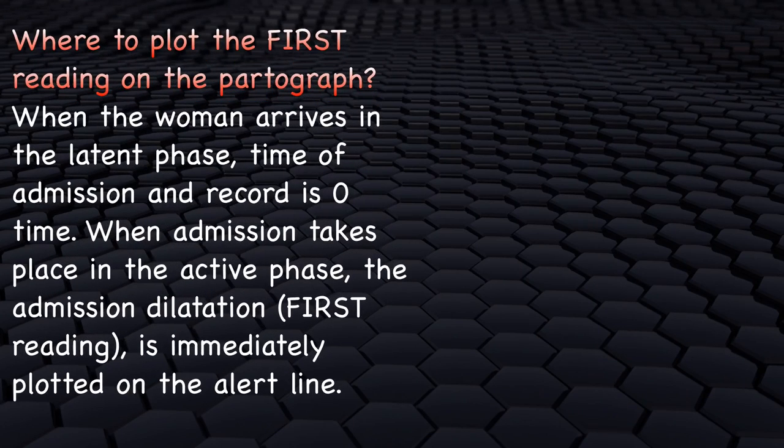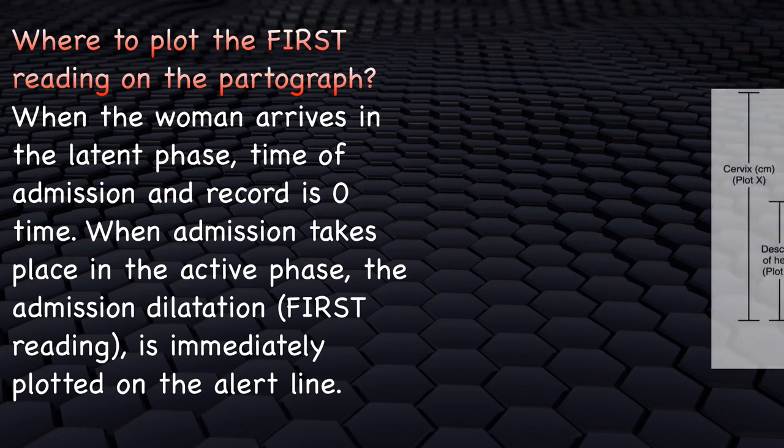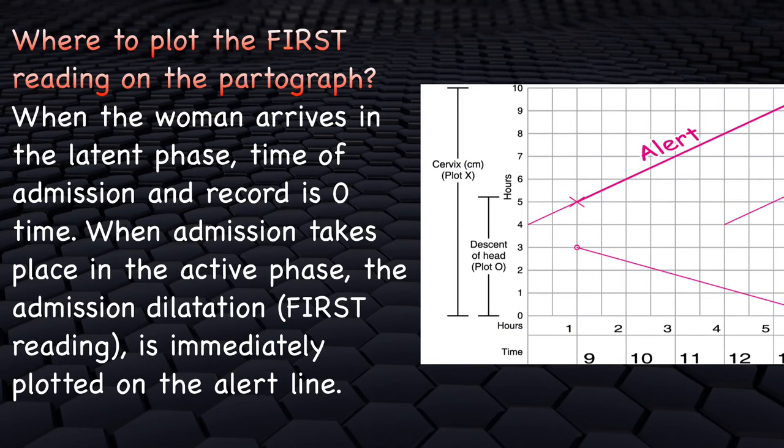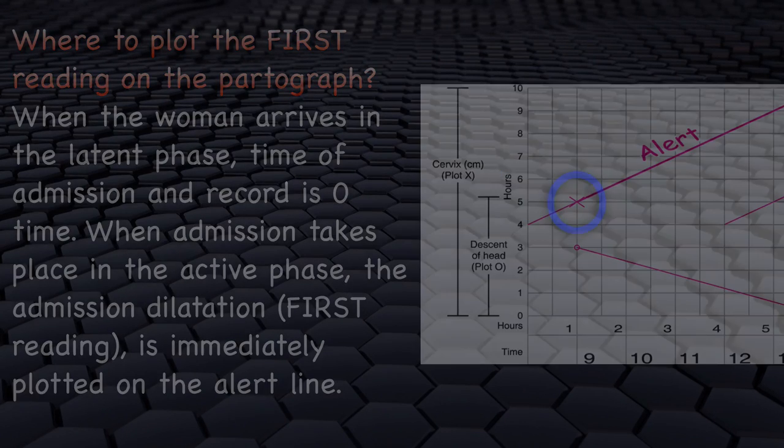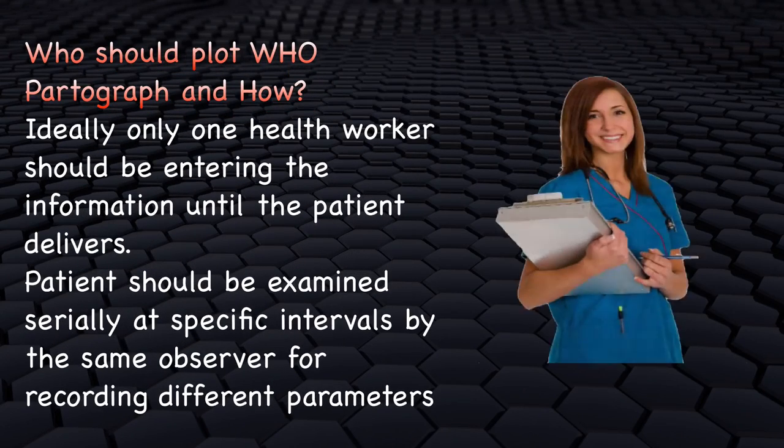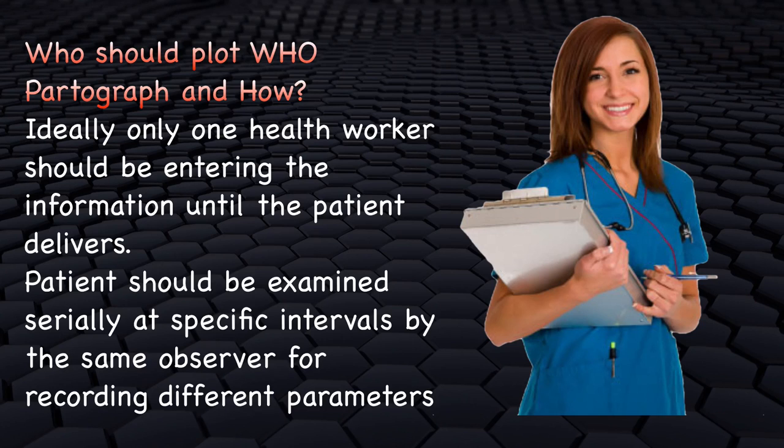It is crucial to plot the first reading in its proper place. This is important because it is not explained in most medical textbooks and therefore health workers do not know this. When the woman arrives in the latent phase, time of admission and record is zero time on the graph. When the admission takes place in the active phase, the cervical dilatation, that is the first reading, is immediately plotted on the alert line. Usually, only one health worker should be entering the information until the patient delivers. Patients should be examined serially at specific intervals by the same observer for recording different parameters.